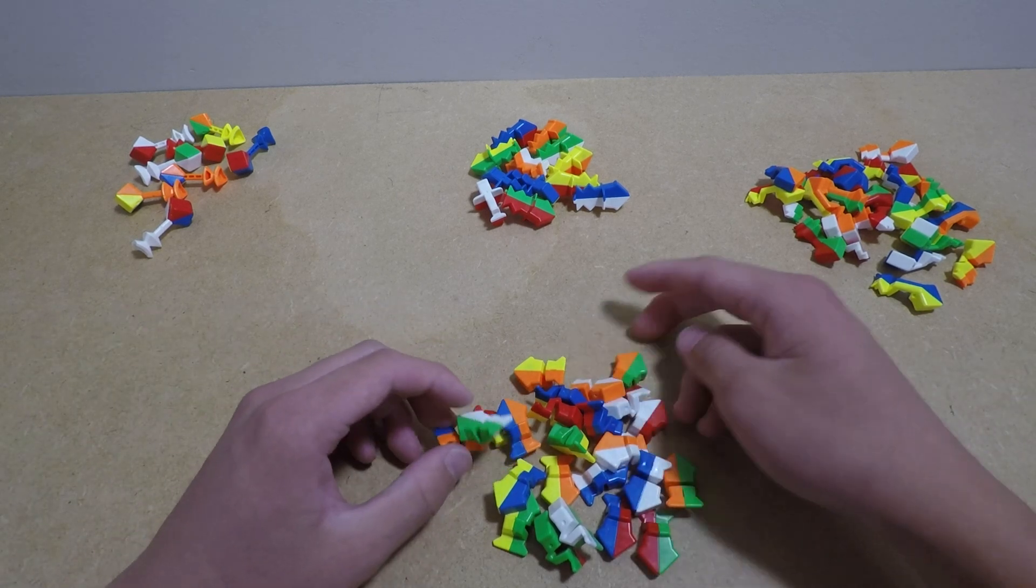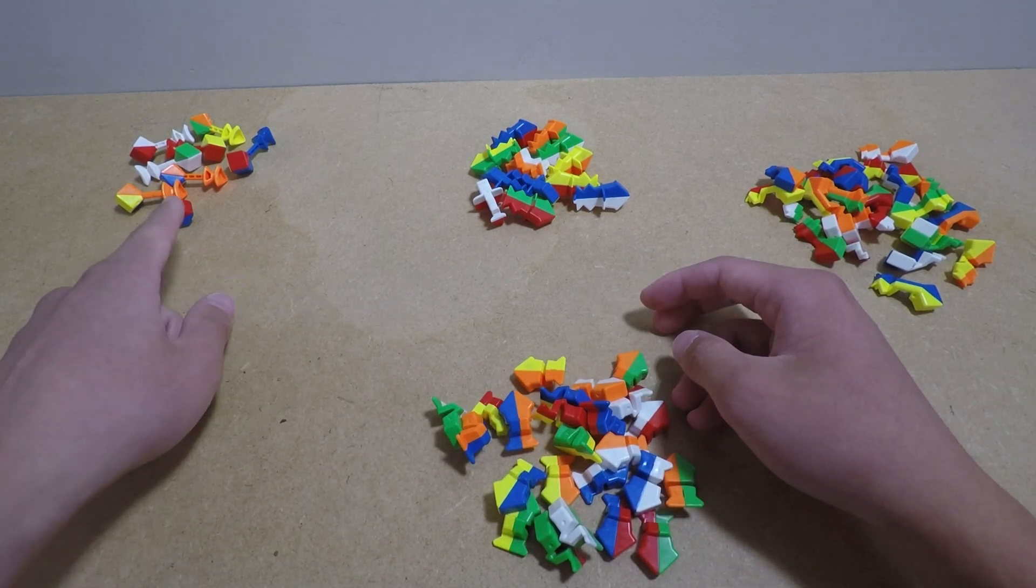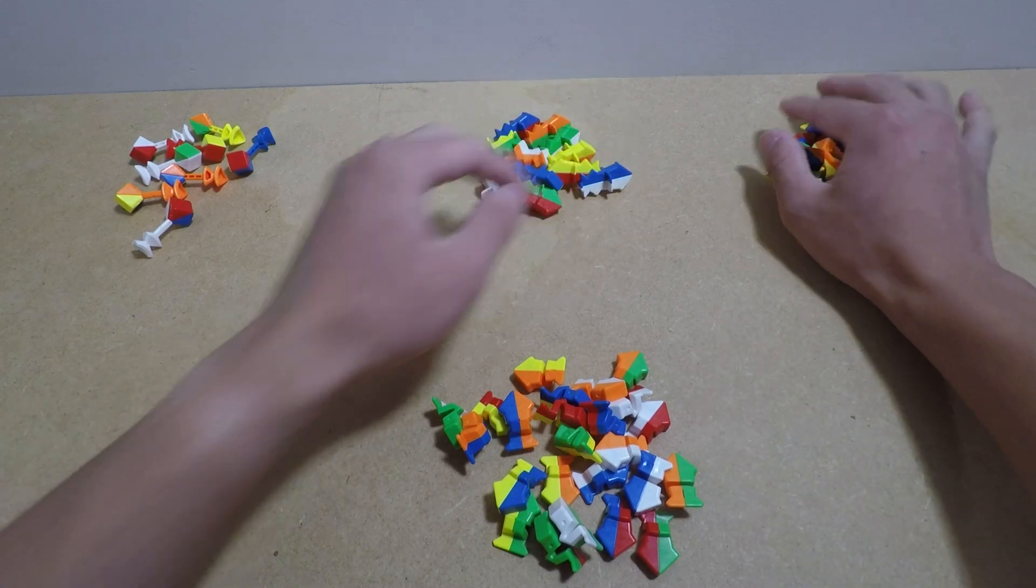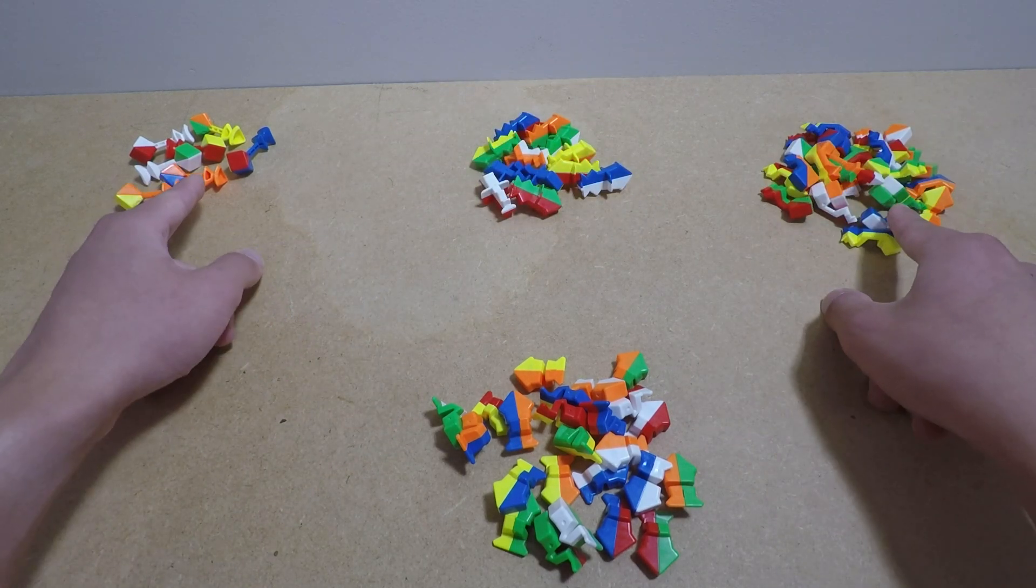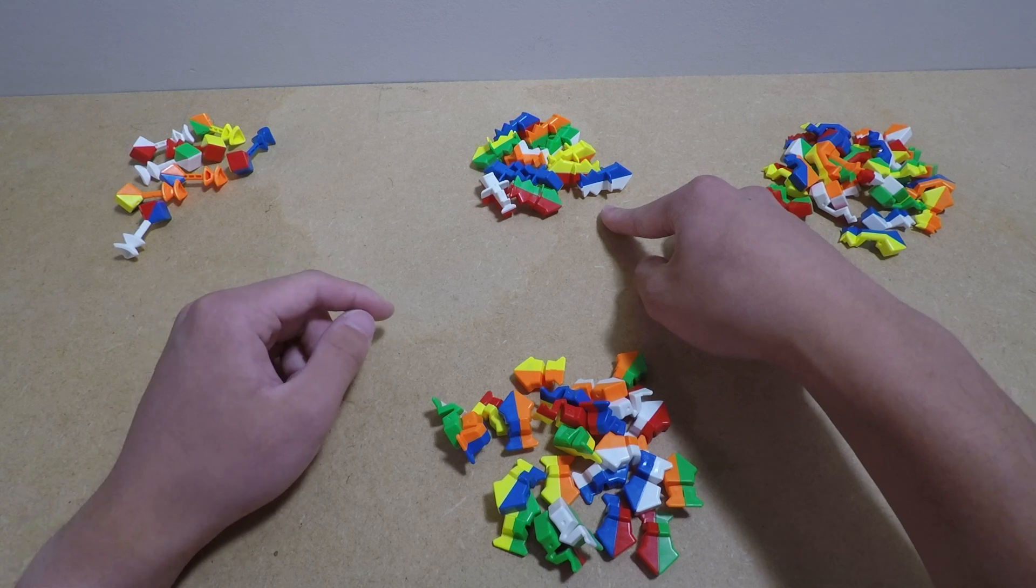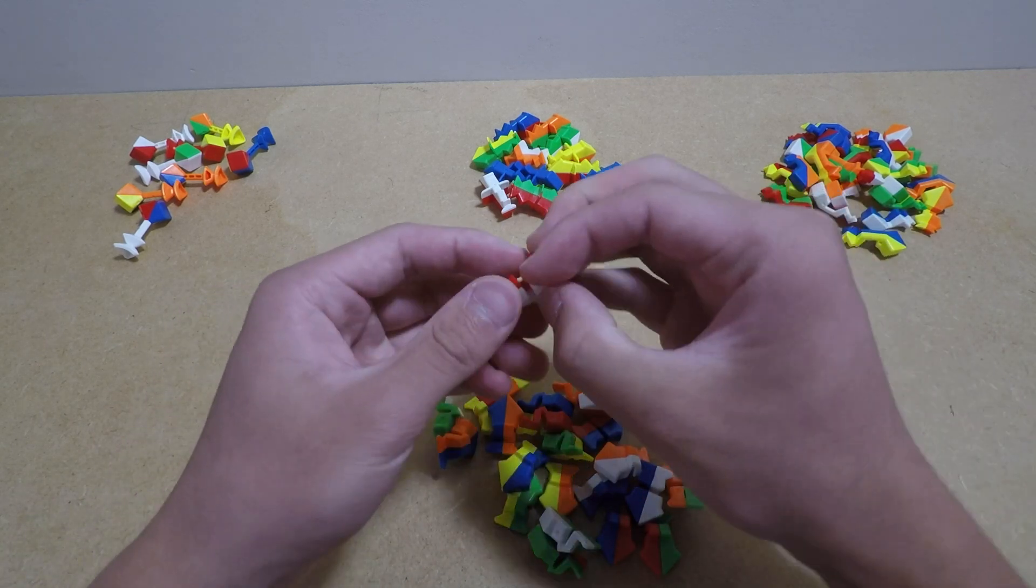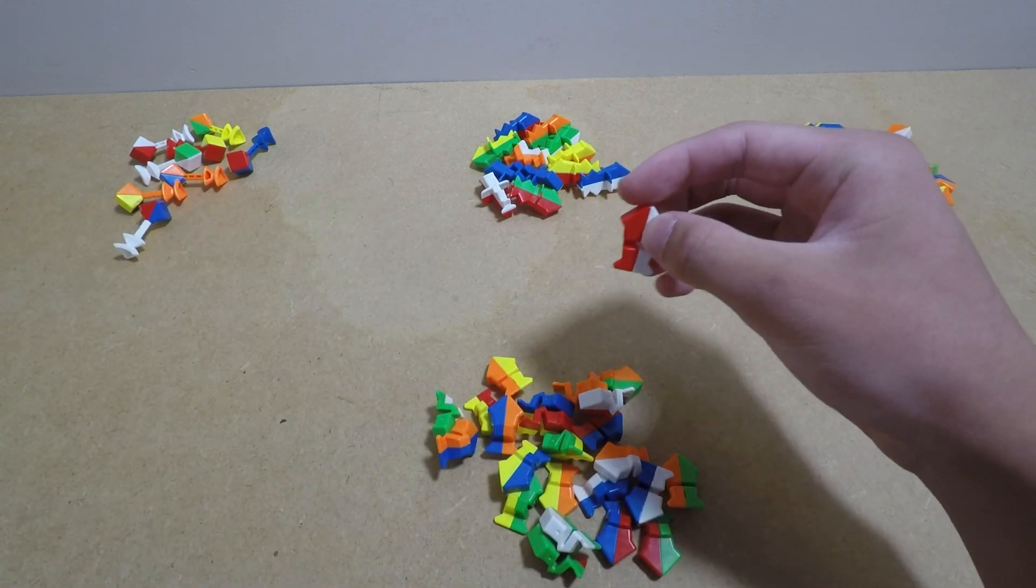Alright, so now I've sorted them into each type of piece, so there's corners, midges, outer wings, and inner wings. The corners and outer wings are gonna be sanded for Florian modding, edges are gonna be sanded for core magnets, and these are gonna be Dorito modded. So, this is what I'm gonna start with. It's pretty much the easiest.